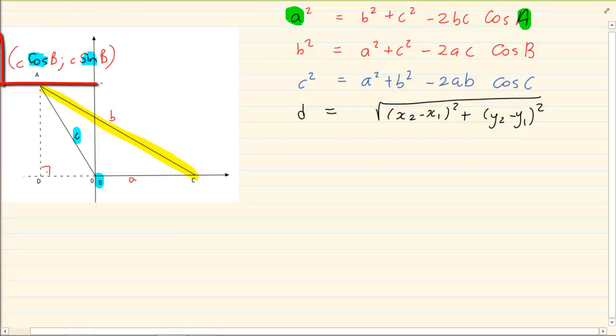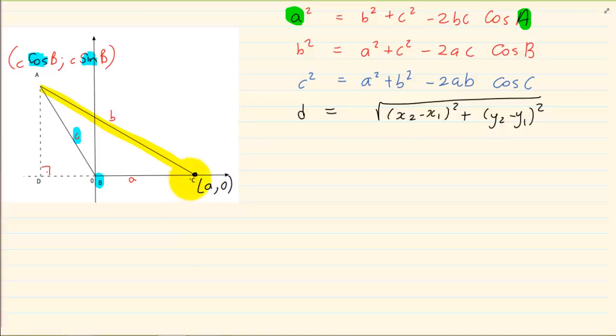Now you have the coordinates of A. What are the coordinates of C? The coordinates of C is A and 0. Why am I saying A and 0? Because if this length is A, the y is 0. Remember length this way refers to x values. So I've got the x and then my y is 0. Now we mark it.